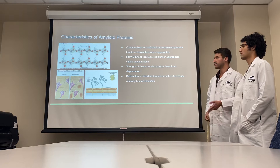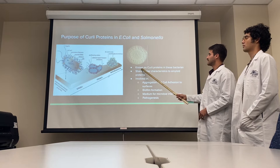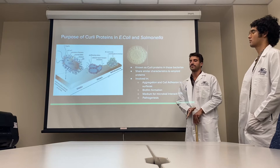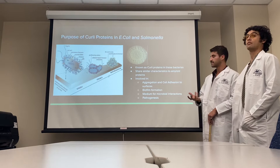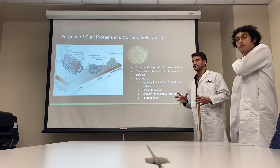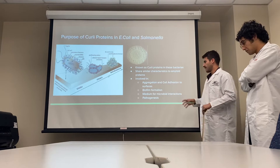These proteins in E. coli are known as curli proteins and are also known as functional amyloid proteins. They are involved in the aggregation and cell adhesion to surfaces as well as to each other, which mediates the formation of the biofilm — a slimy extracellular matrix that allows for interactions between the bacteria and the environment. This is typically regarded as the first step of pathogenesis, which is the formation of disease within an organism.